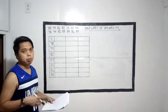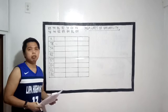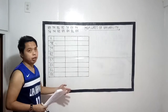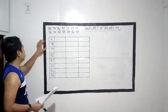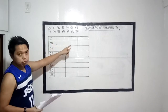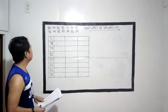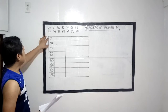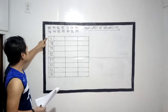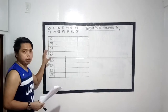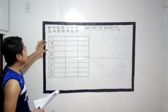Mapapansin ninyo meron tayong 14 scores. Now bago tayo mag-start, gawa muna tayo ng table. I already prepared a table para magagamit natin sa discussion. Naggawa ako ng 4 columns para ma-fill up natin gamit yung ating mga scores or data. I used x to represent our scores. I started filling up the table with our scores.